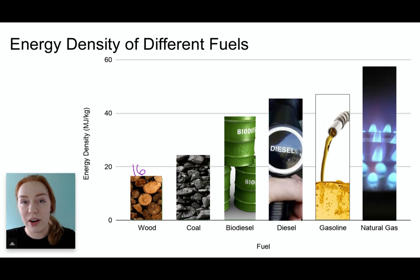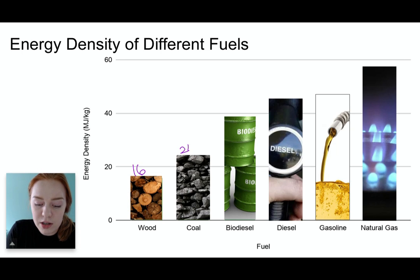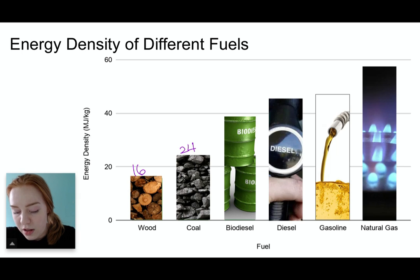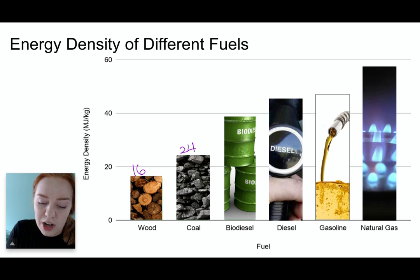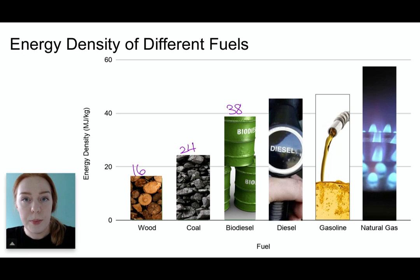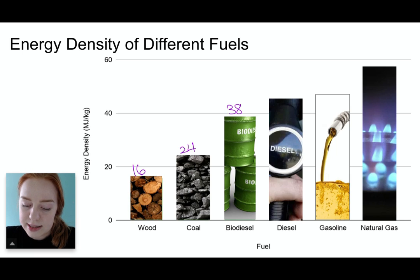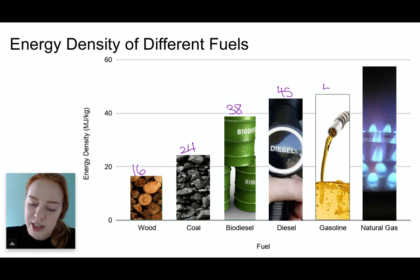Next let's look at coal. Coal is used all over the world for a wide range of energy purposes, but it's only a little bit more energy dense than wood, sitting at 24 megajoules per kilogram. Next we have biodiesel, which can be used to drive cars — it's typically leftover fry oil from fast food restaurants — and biodiesel has 38 megajoules of energy per kilogram. Next we have regular diesel, which is an oil product sitting at 45 megajoules per kilogram, and then gasoline, which we're all very familiar with, at 46 megajoules per kilogram.